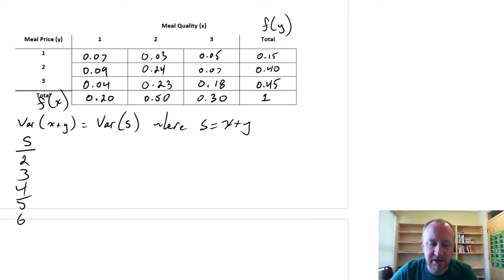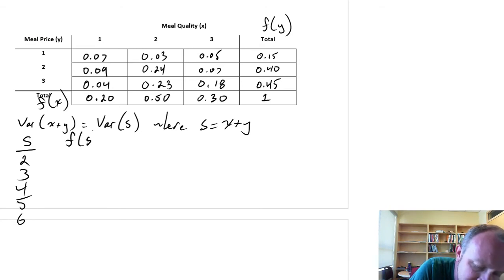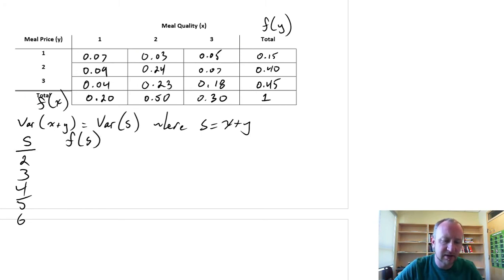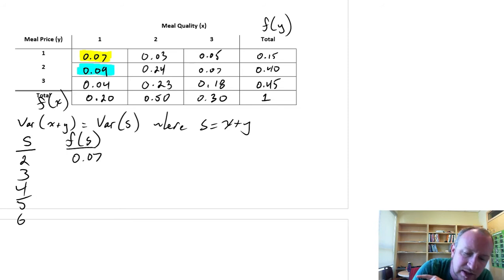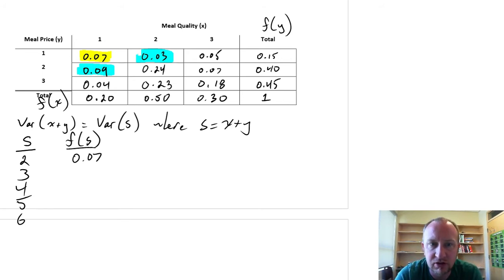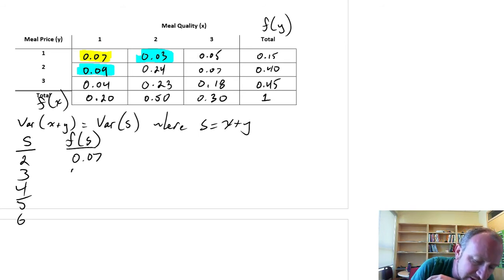So the next step, now we need to calculate what are the frequencies associated with that new variable s. So if s is equal to 2, what are the corresponding frequencies for those combination of values for x and y that give us a value of 2? The only way that s can be equal to 2 is when both x and y are equal to 1. So the relevant probability for an s value of 2 is 0.07. Now where can s be equal to 3? s can be equal to 3 when x is 1 and y is 2, and also when x is 2 and y is 1. We just need to add those two values together, so that gives us 0.12.